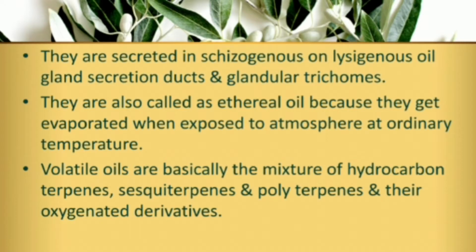Another name for volatile oils is ethereal oils, because they get evaporated at ordinary temperature. Volatile oils are basically a mixture of hydrocarbon terpenes, sesquiterpenes, and polyterpenes, along with other oxygenated derivatives. Mostly they are terpenoidal compounds.